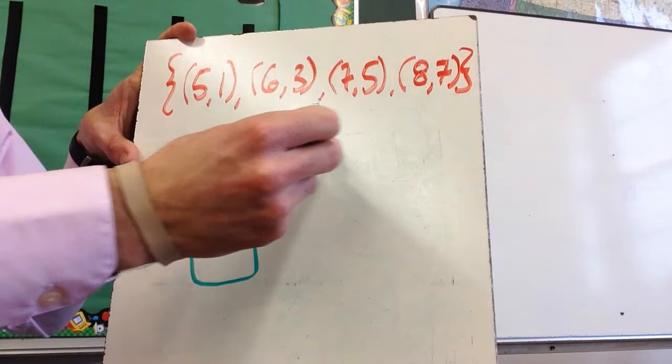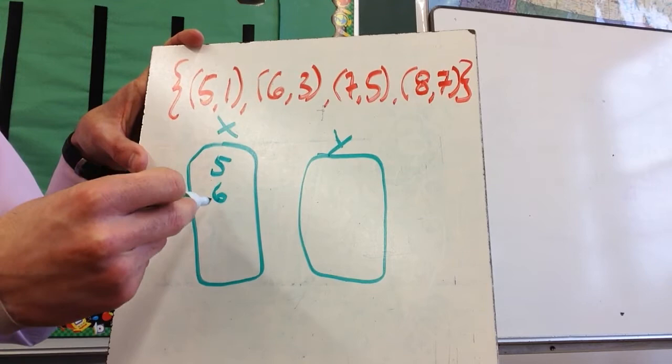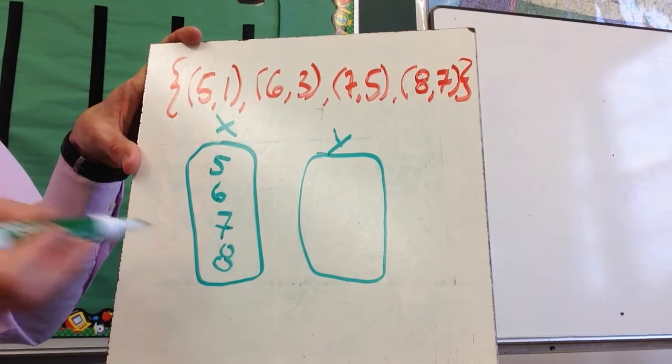I'm going to call this x and this y. I'm going to list all of the x's here, ideally in numerical order. I'm not going to repeat them. So 5, 6, 7, 8. If a number appears twice, I don't want to write it twice, I only want to write it once. Same thing with the y: 1, 3, 5, 7.